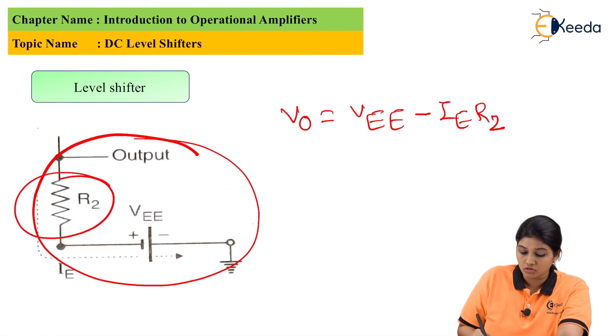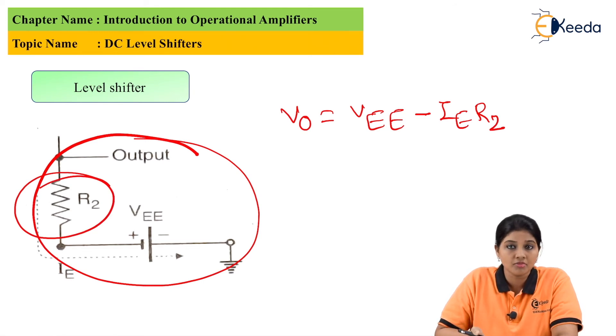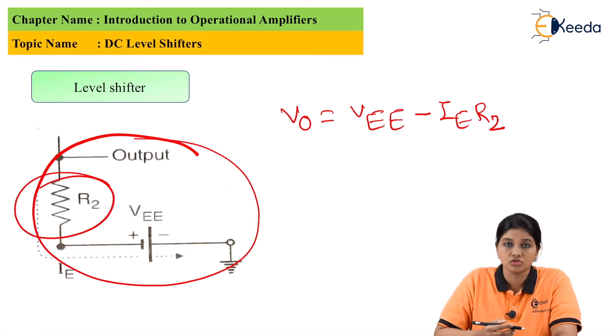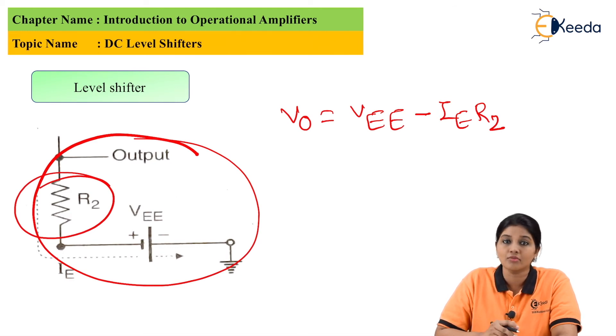Now instead of using R2, it can be replaced by a current mirror circuit or constant current source. This provides constant current to the circuit and is also used to bring the DC level back to zero.